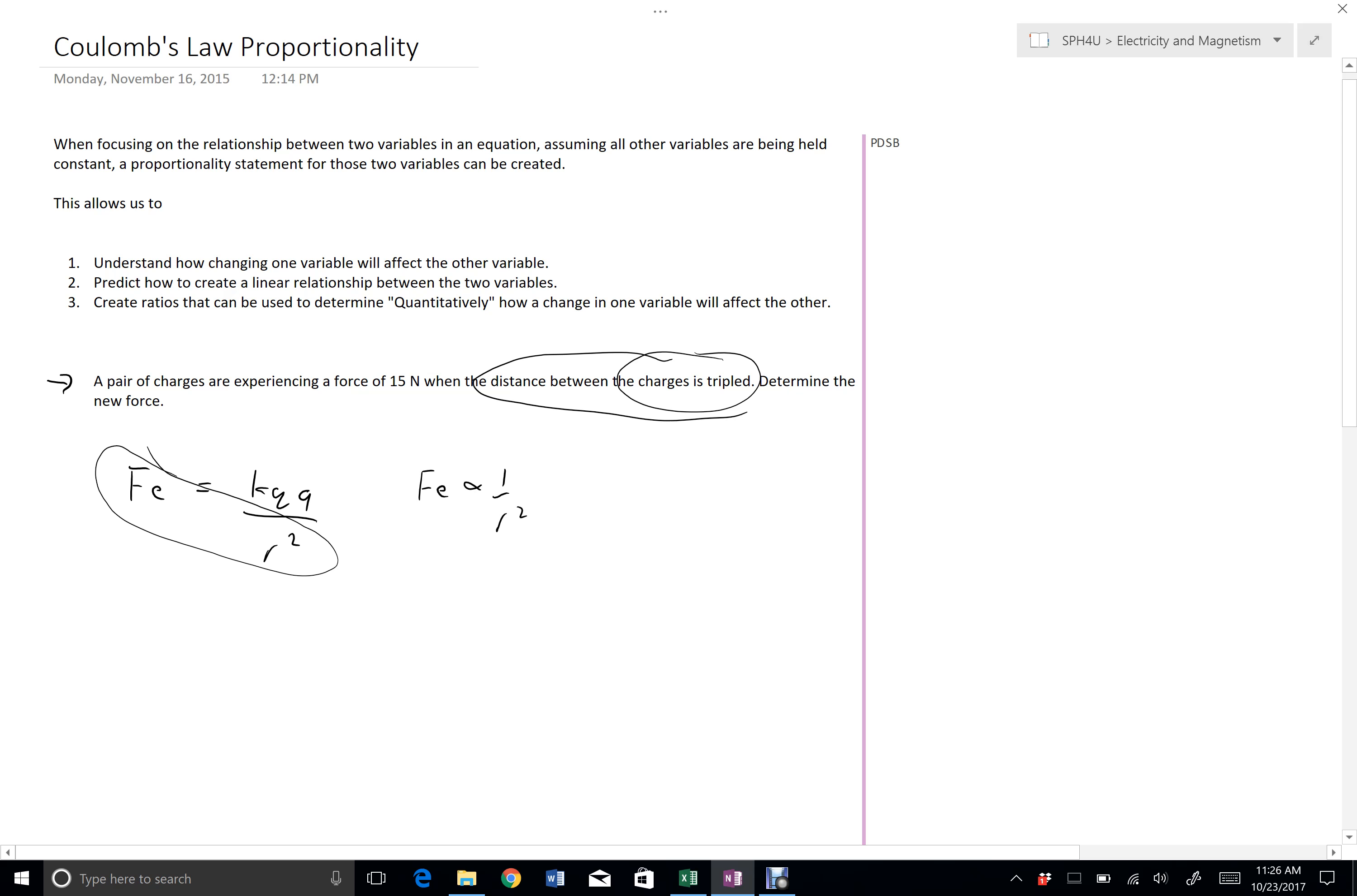That means if I want to make a proportionality statement, or a ratio, if F1 is on the top on this side, then R1 needs to go on the bottom and needs to be squared. Similarly, if F2 is on the bottom here, because this relationship is inverse, that means R2 is going to go on the top here, and don't forget that it's squared.